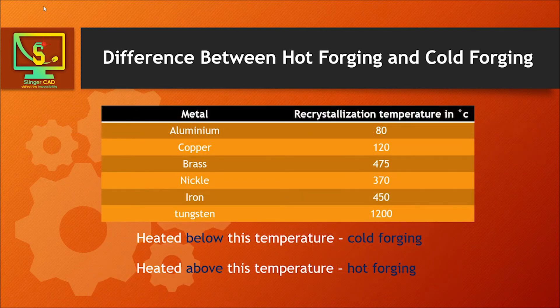The table shows some metals with their recrystallization temperatures. When these metals are heated and forged above that temperature, it is called hot forging. When these metals are heated and forged below that temperature, it is called cold forging.